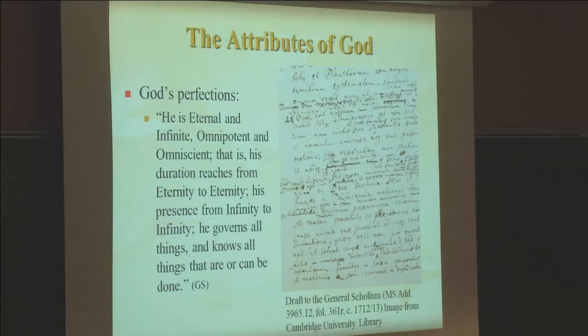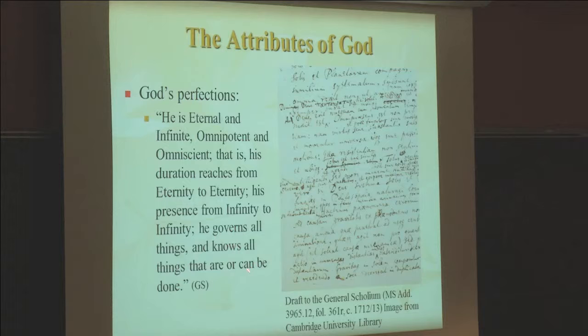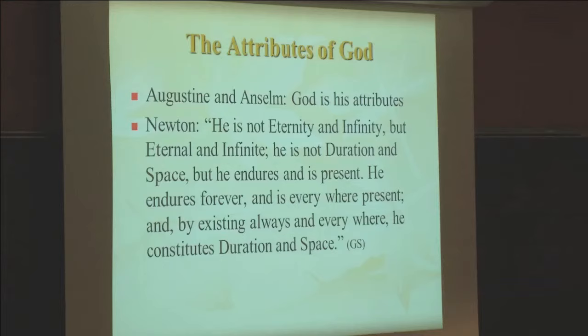Using the language of classical theism, Newton labels God's attributes as perfections. He is eternal and infinite, omnipotent and omnipresent. His duration reaches from eternity to eternity, his presence from infinity to infinity. He governs all things and knows all things that are or can be done. It is in his discussion of the attributes of God that Newton interacts more directly with the scholastic tradition. For Augustine and Anselm, God is his attributes. As Anselm states: 'Thou art the life by which thou livest, the wisdom by which thou art wise, and so with all thine attributes.' Newton, however, would not agree with this position. He says he is not eternity, he is not infinity, but eternal and infinite. He is not duration and space, but he endures and is present. He endures forever and is everywhere present, and by existing always and everywhere, he constitutes duration and space.